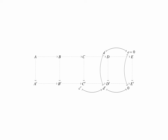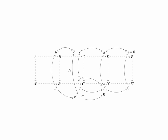And using exactness of the top row at D, we see that there's an element C mapping to D back in the group C. We're not quite done yet, because if we use commutativity of the centre-right square, we can deduce that the image of C, let's call it C'' in C', maps round to D' in D', but we can't say for certain that C'' is equal to C'. What we have is two elements, C'' and C', both mapping to D', and so their difference, C' minus C'' maps to 0. By exactness of the bottom row at C', this difference comes from some element B'. Using the fact that the map from B to B' is an epimorphism, we see that there's some element B in B mapping down to B'.